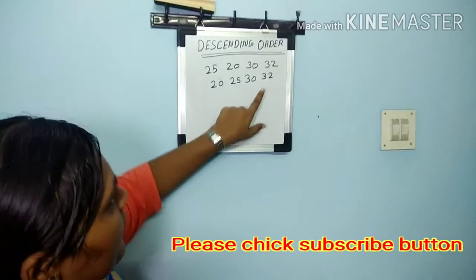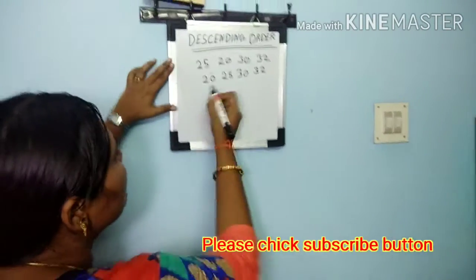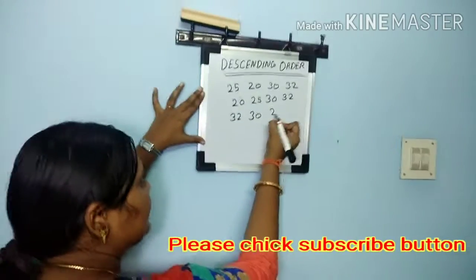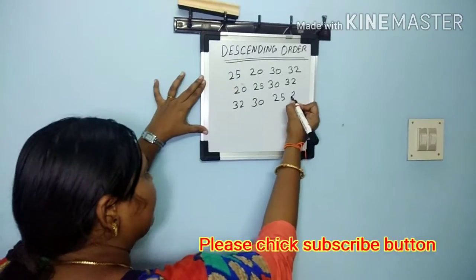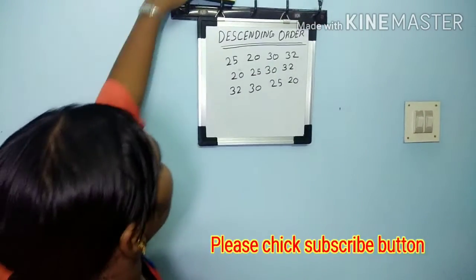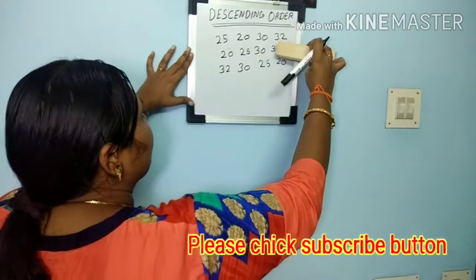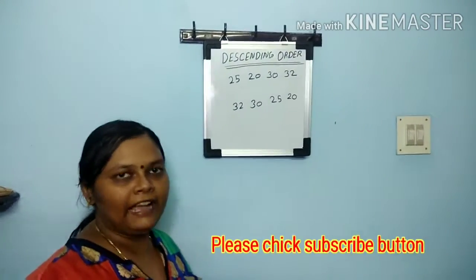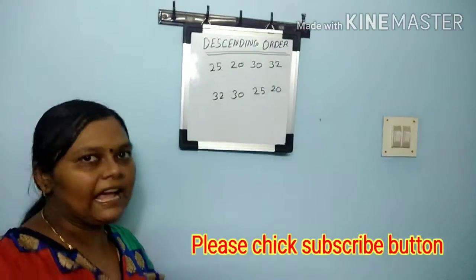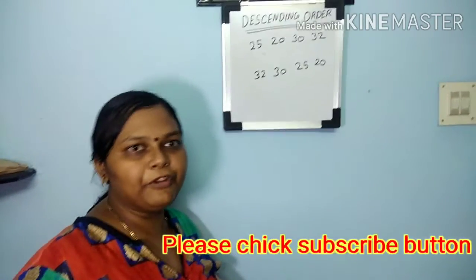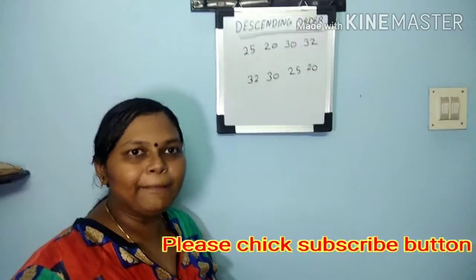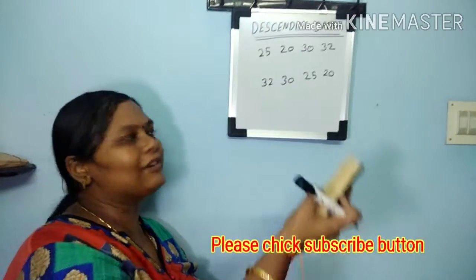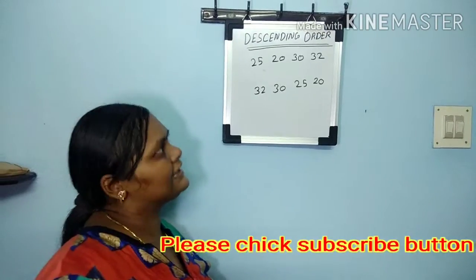Now ask them to write in reverse: 32 first, then 30, then 25, then 20. Ask them to erase the first line so they will be clear about the descending order. If they practice this 10 times, they will be able to do descending order directly. As they are small kids, ask them to do ascending order first, then write the same thing in reverse — so it becomes descending order.